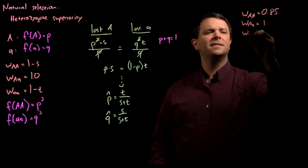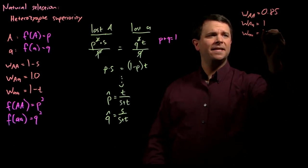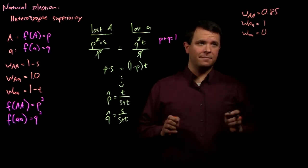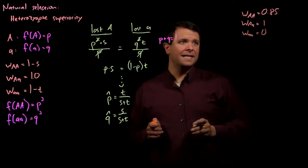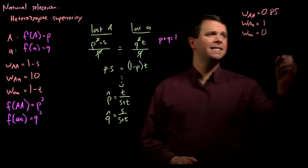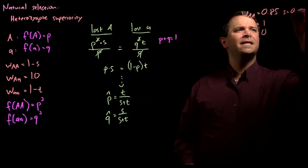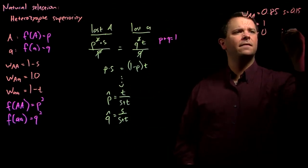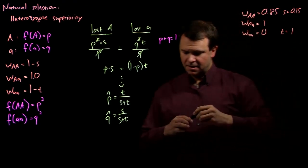And the homozygous recessive fitness, these individuals do not reproduce if they're untreated, and so it's 0. And so, in this case, s equals 0.15 and t equals 1.